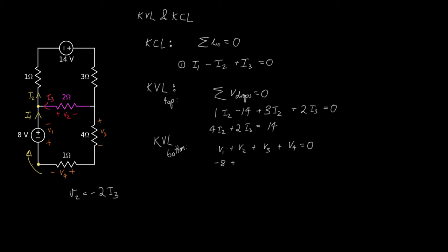I3 is flowing into the negative terminal of V2, so the voltage drop V2 related to I3 is minus two I3.